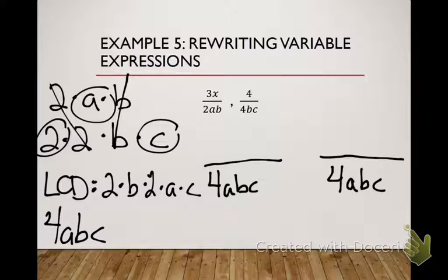Times it by 2. Times it by 2 what? 2C. Times it by 2C. So when you multiply the top by 2C, what do you get? 6CX. 6CX. So that's what you're missing. What's the C? Yeah, 6CX.